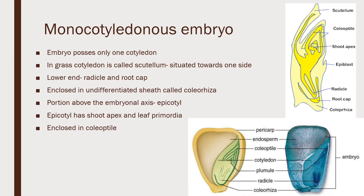Now let us study about the monocot embryo. Monocot means the embryo possessing only one cotyledon. In the grass family, the cotyledon is called scutellum, situated towards one side. The lower end is called the radicle and it is covered by the root cap.